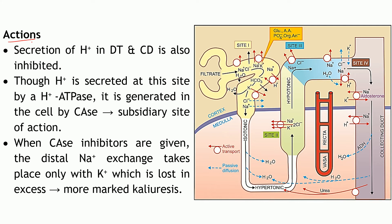Regarding the mechanism of action: acetazolamide inhibits carbonic anhydrase. At site 2 (proximal tubule), the carbonic anhydrase type 2 within the proximal tubular cells is inhibited. As a result, reabsorption of bicarbonate is prevented and reabsorption of sodium ions is also inhibited, because H+ is not available for the exchange.